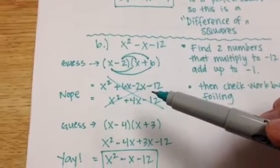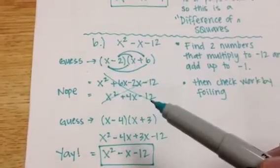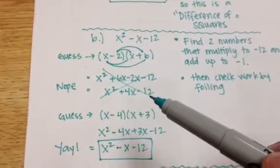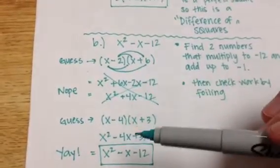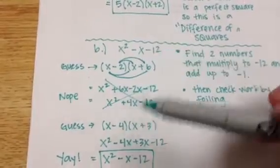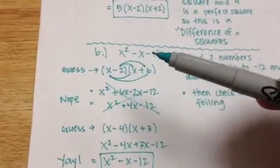So instead of using your erasers and wasting your eraser, just cross it out, and then I'll know that that was one of your guesses that didn't work out. The next guess I'm going to make, I know that 4 times 3 gives me 12, and I'm going to make one of them negative, so I get a negative 12.